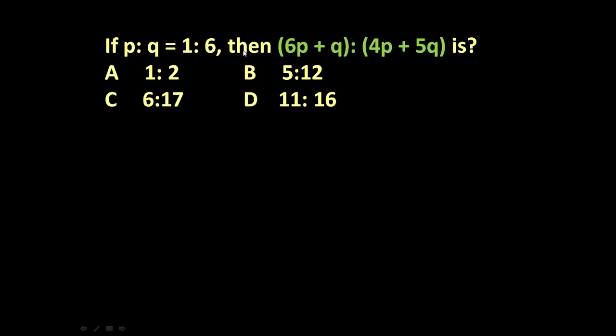Then (6p + q):(4p + 5q) is? Four options are given and we have to identify the correct option. To solve such types of problems, you just divide numerator and denominator by q.